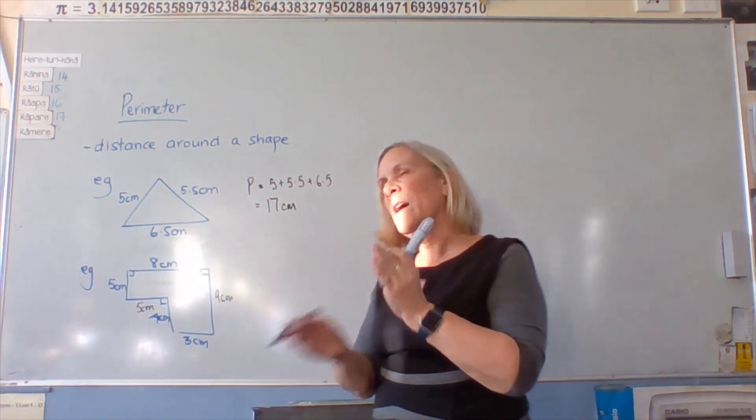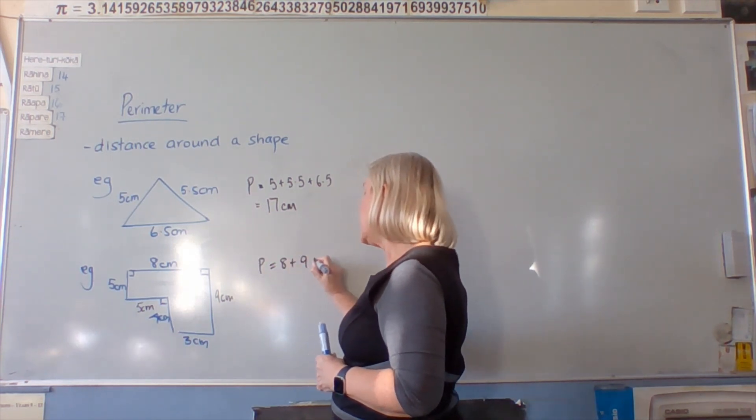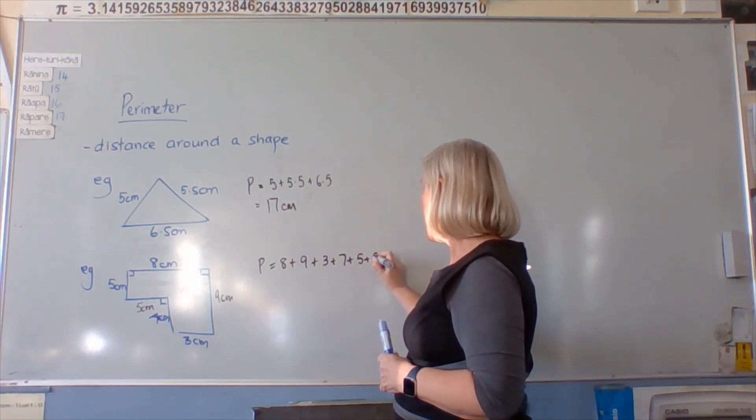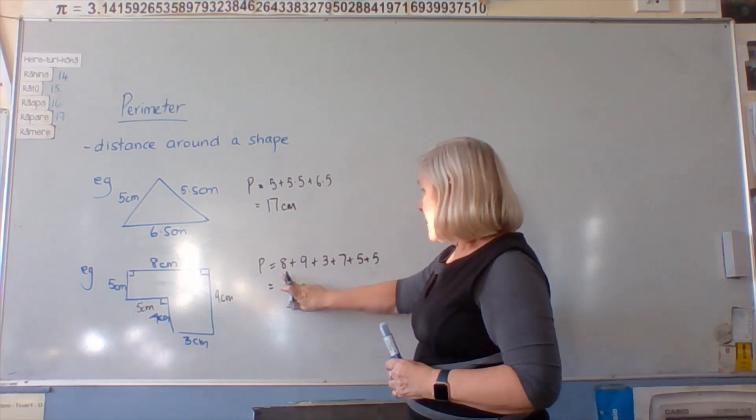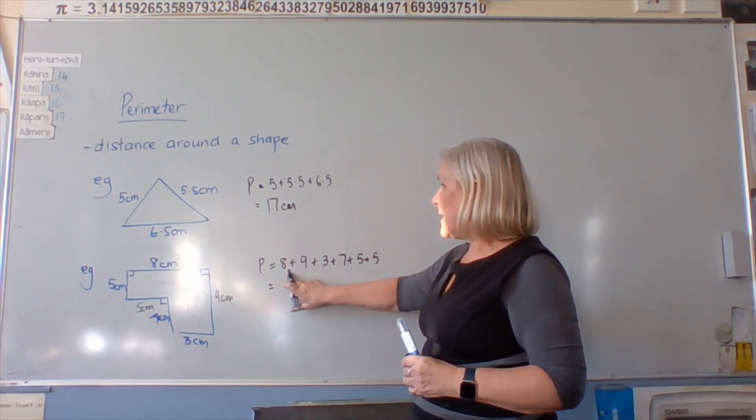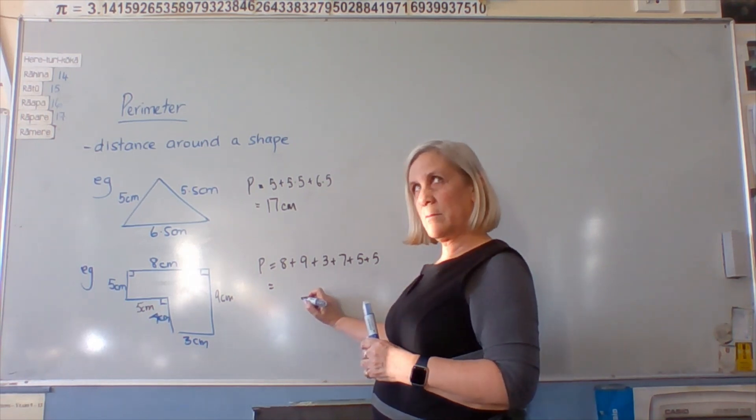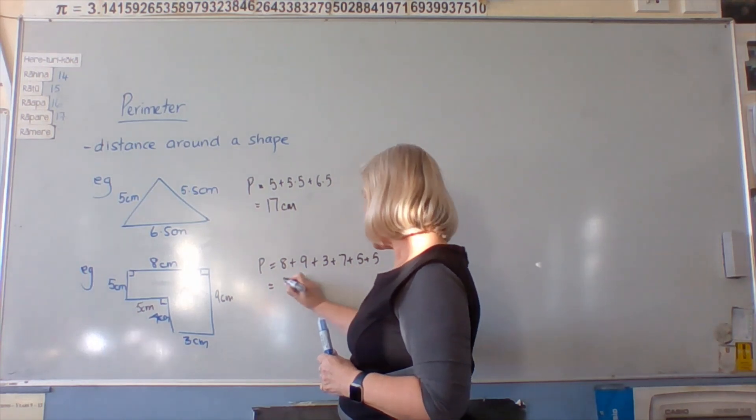So now that we've got all the sides, we would then put our working: 8 plus 9 plus 3 plus 7 plus 5 plus 5, which is, 9 is 18 and 8 and 8 is 16 and 18 and 16 make...